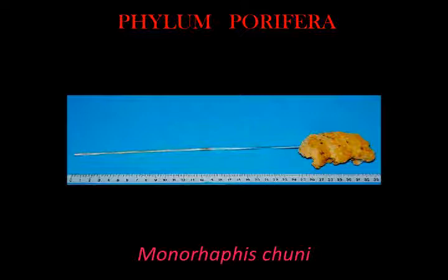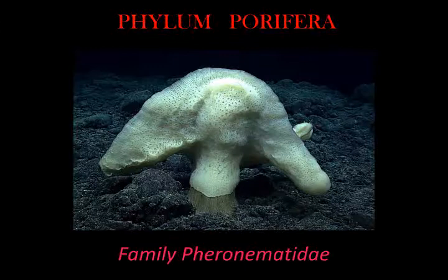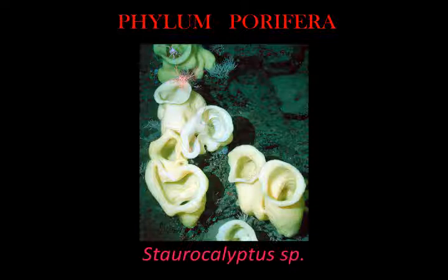Hexactinellida examples include Ialonema spish, Monorhaphis chuni, family Pheronematidae, Euplectella aspergillum, Staurocalyptus spish, and family Uncinateridae.